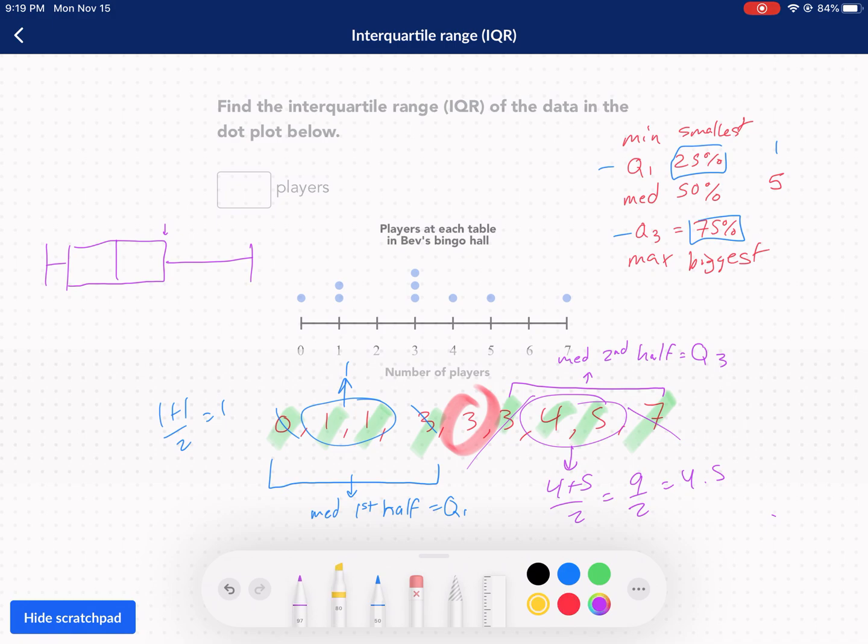interquartile range essentially just means this area right here. The number where we take our Q3 and our Q1, we subtract them. Q3 minus Q1 is our IQR. This is as simple as that. Q3 minus Q1 equals IQR. I was going to get it eventually. 4.5 minus one, and that's 3.5. That's our IQR.